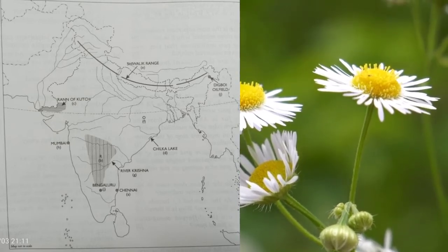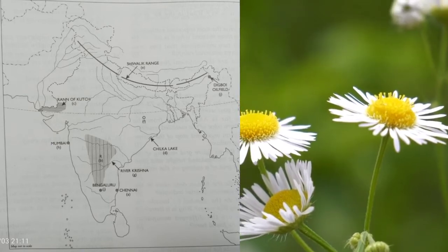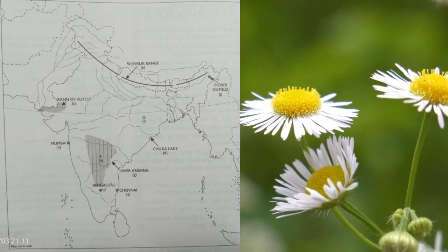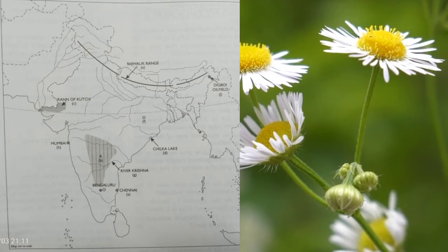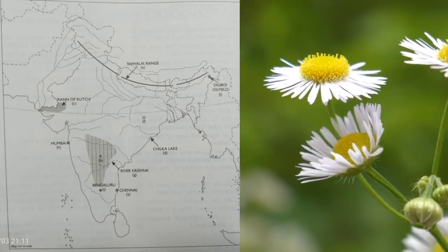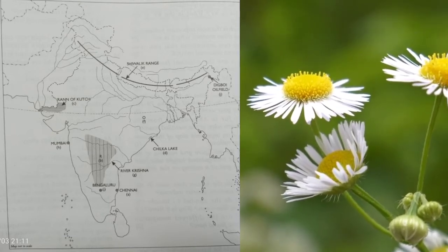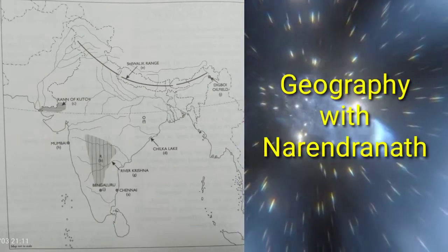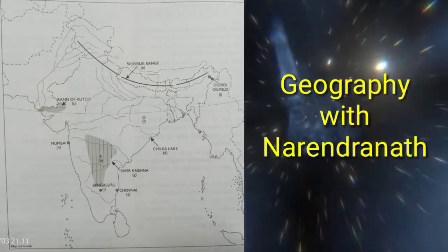'B' — print 'R' over an area receiving less than 50 centimetres of rainfall. 'C' — Rann of Kutch. 'D' — Chilka Lake. 'E' — Shivalik Range. Print 'O' over an area of iron ore. 'G' — river Krishna. 'H' — mark with a dot and name the functional capital of India.